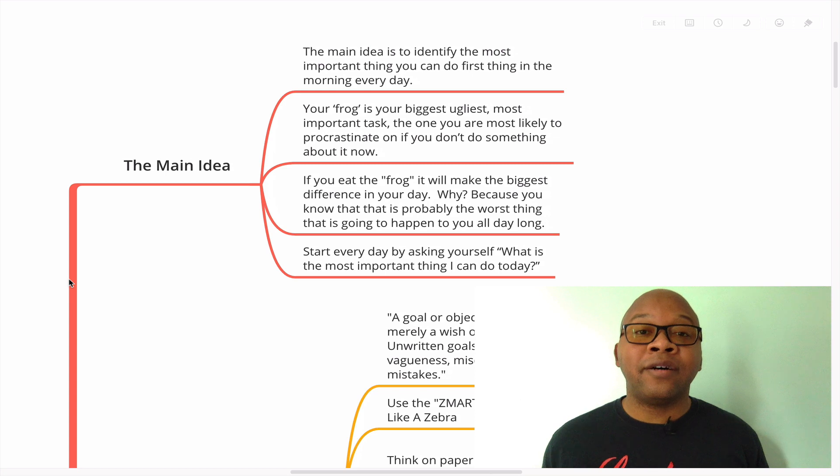The main idea of the book is to identify the most important thing you can do first thing in the morning every day. Your frog is your biggest, ugliest, most important task, the one you are most likely to procrastinate on if you don't do something about it now. If you eat the frog, it will make the biggest difference in your day. Why? Because you know that is probably the worst thing that is going to happen to you all day long. Start every day by asking yourself, what is the most important thing I can do today?